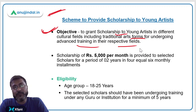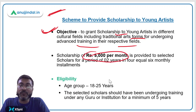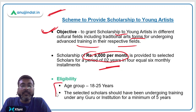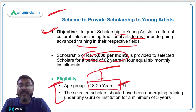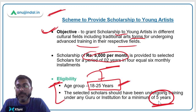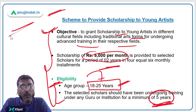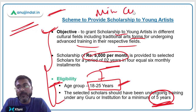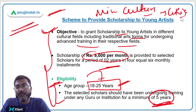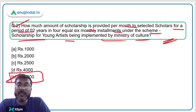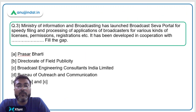The scholarship amount is Rs. 5,000 per month, provided for a period of two years in four equal six-monthly installments. Eligibility: the scholar must be between 18 and 25 years of age and should have been undergoing training under any guru or institution for a minimum of five years. The scheme is implemented by the Ministry of Culture, headed by Mr. G. Kishan Reddy. The correct answer is Option E — Rs. 5,000.